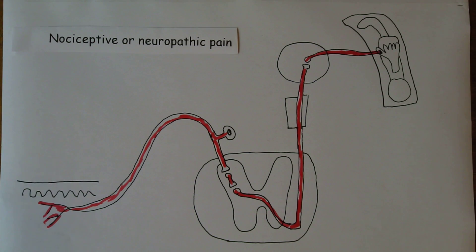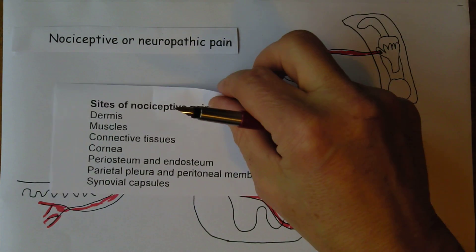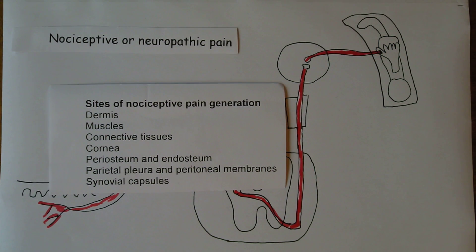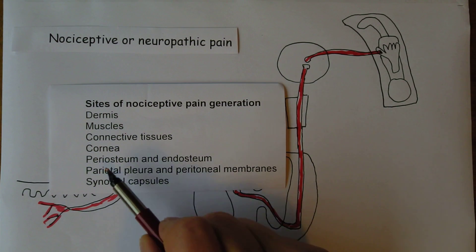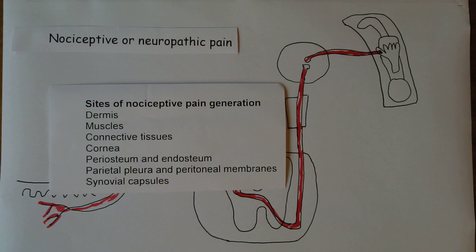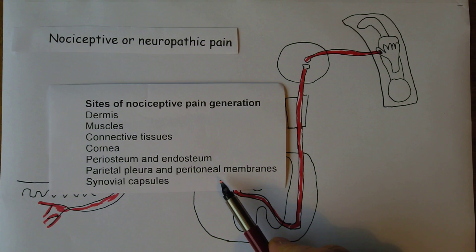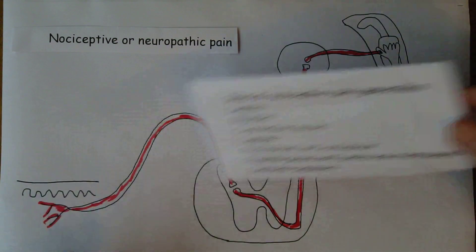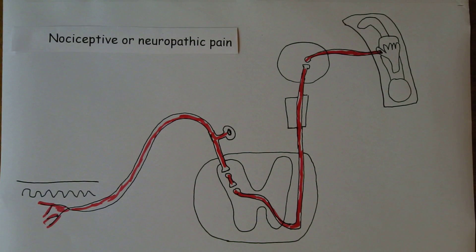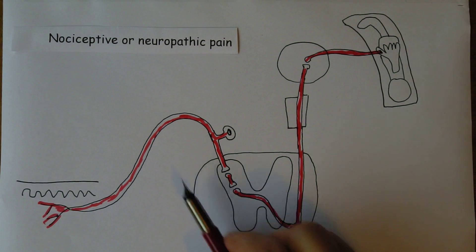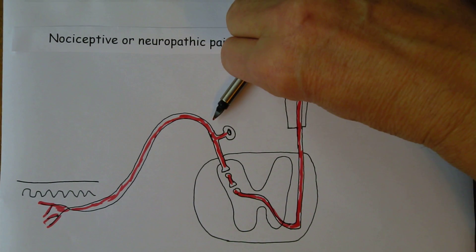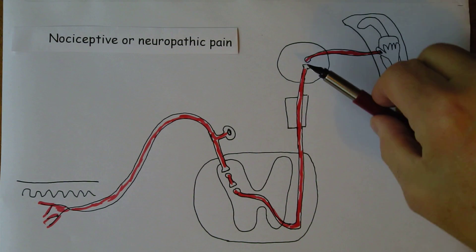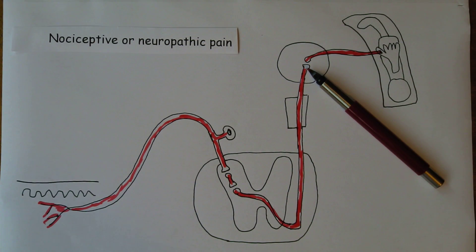The system is supposed to respond to nociceptive pain. Nociceptors are found in the dermis, muscles, connective tissues, and cornea. The periosteum and endosteum — around and inside the bone — and the medullary cavity. The parietal pleural and parietal peritoneal membranes are very sensitive to pain, as are the synovial capsules. If the pain impulse starts anywhere else along the pathway, it can still be interpreted as pain because it's the thalamus that generates the pain.